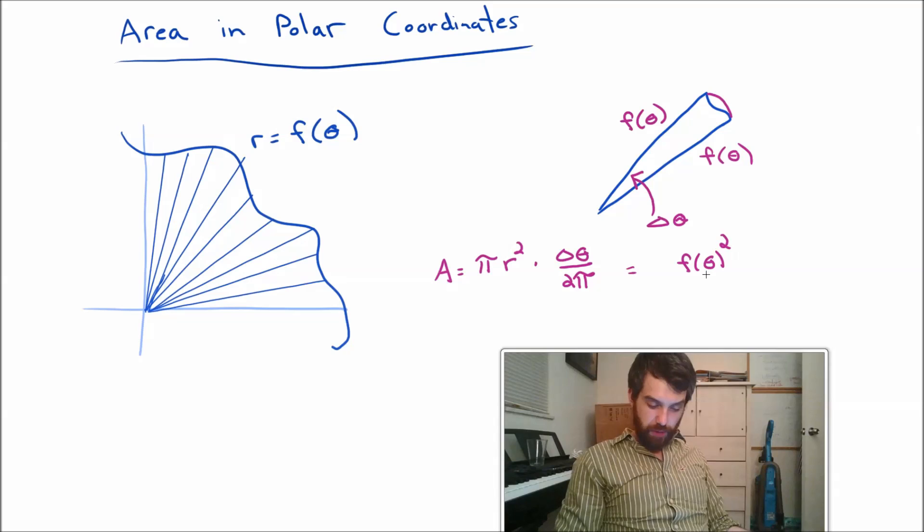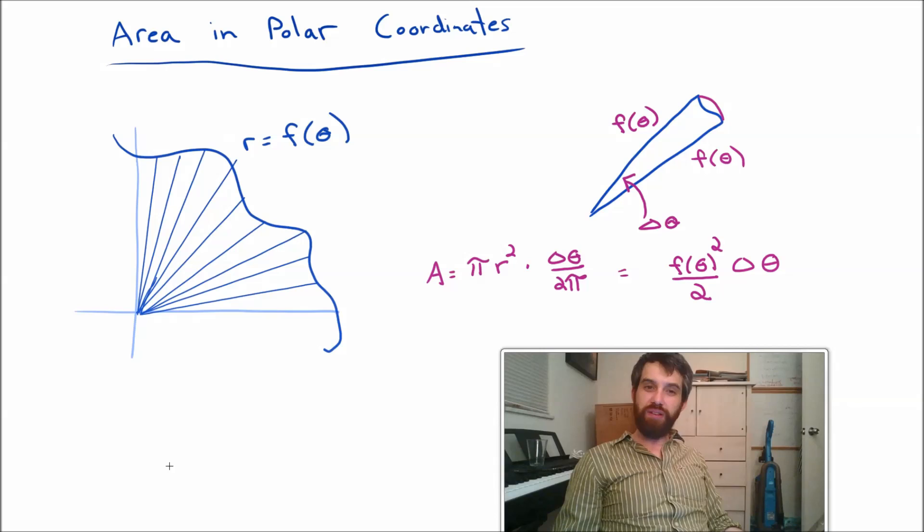Since the radius is going to be the f of theta, this is going to be f of theta squared. The pi on the top and the bottom, they cancel, but I do divide by 2, and I do multiply by a delta theta. So that's going to tell me the area of my pizza slice.